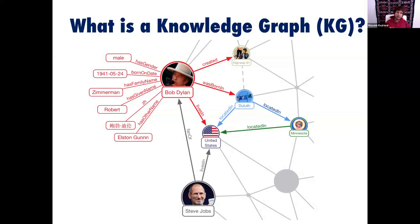This is a very intuitive way to represent data. You have entities, attributes, and relationships, and you can represent this as a graph — nodes or vertices, which are the entities, and directed labeled edges, which are the relationships. This is basically a knowledge graph. There's a rich formal definition, but intuitively this is all it is.